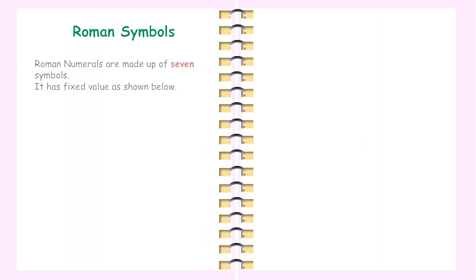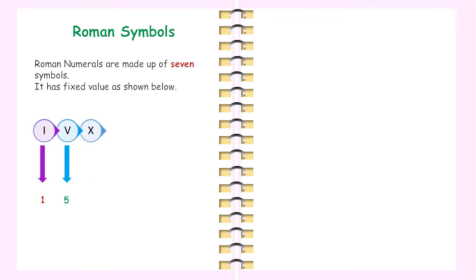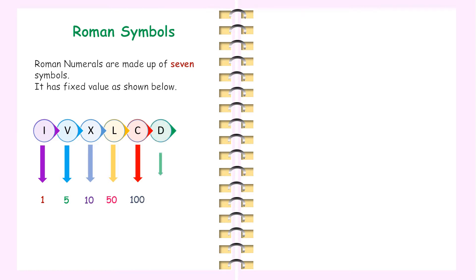Roman symbols. Roman numerals are made up of seven symbols, each with a fixed value: I has a value of 1, V has a value of 5, X has a value of 10, L has a value of 50, C has a value of 100, D has a value of 500, and M has a value of 1000. There is no symbol for zero.